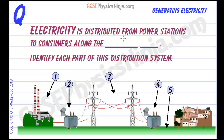Electricity is distributed from power stations to consumers along the national grid. That's a phrase that you need to learn. Identify each part of this distribution system.